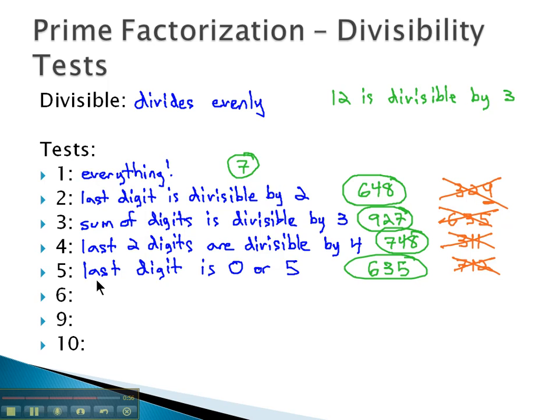6 takes advantage of two different shortcuts. 6 must be divisible by 2 and 3. If it passes the test for 2 and 3, then it also passes the test for 6.